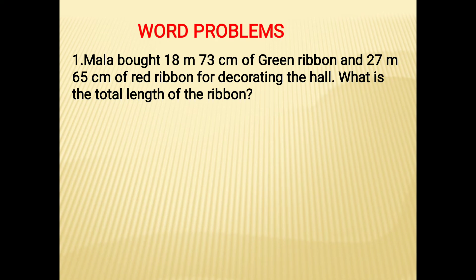Now see the first sum. Mala bought 18m 73cm of green ribbon and 27m 65cm of red ribbon for decorating the hall. What is the total length of the ribbon?